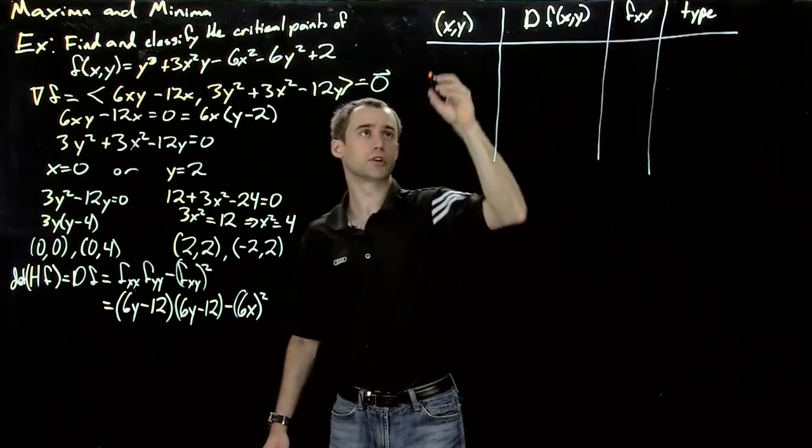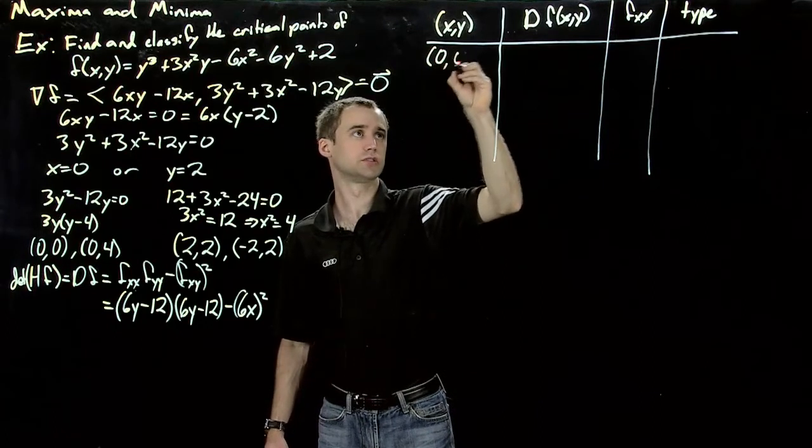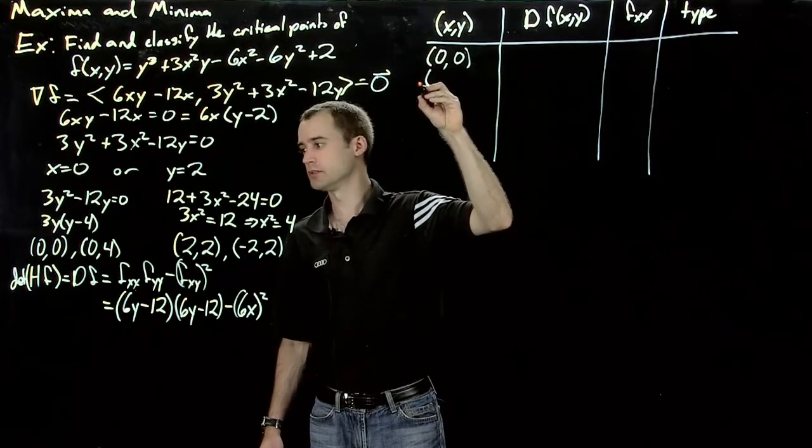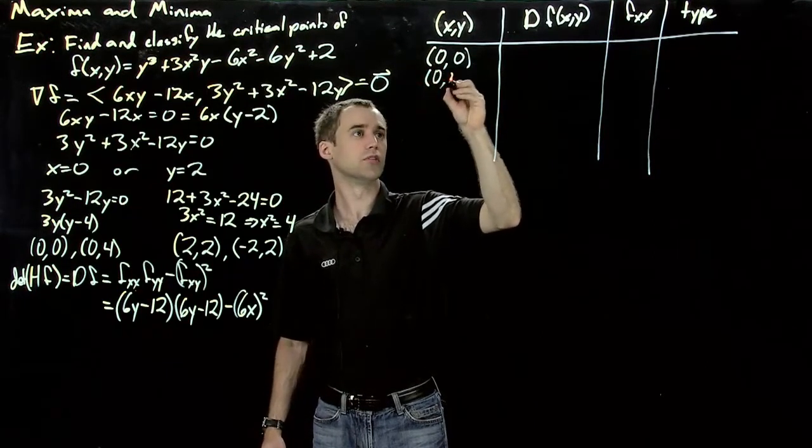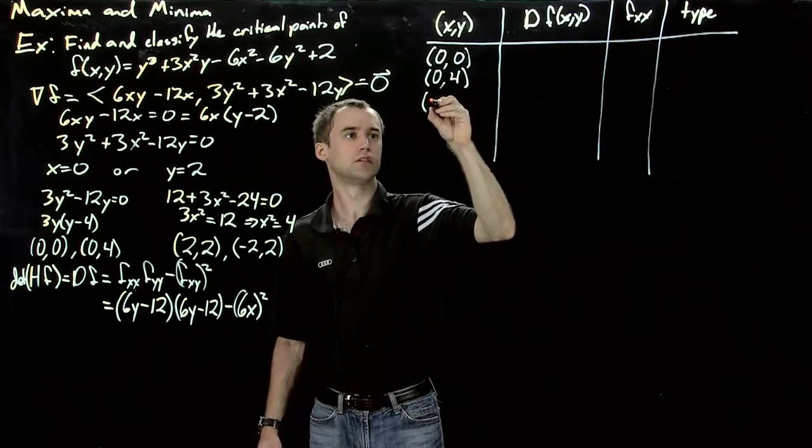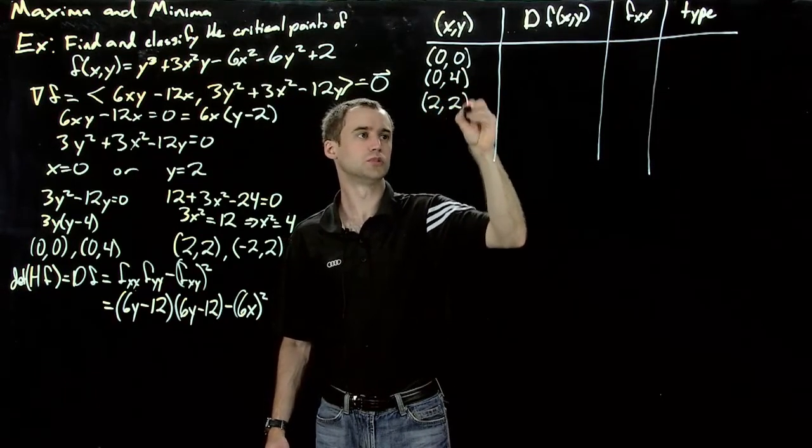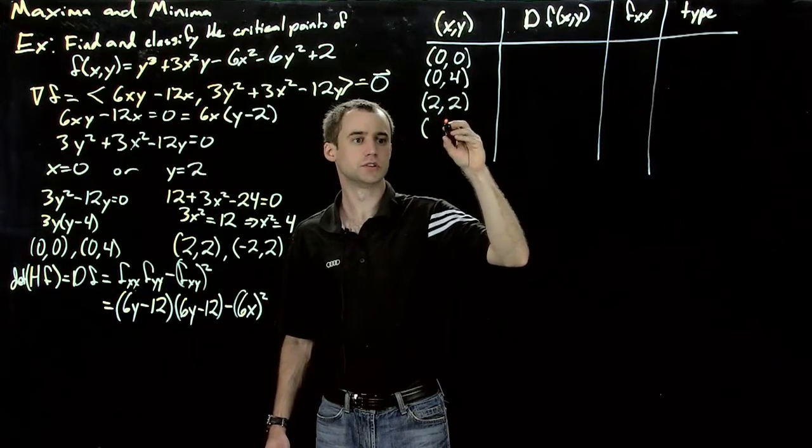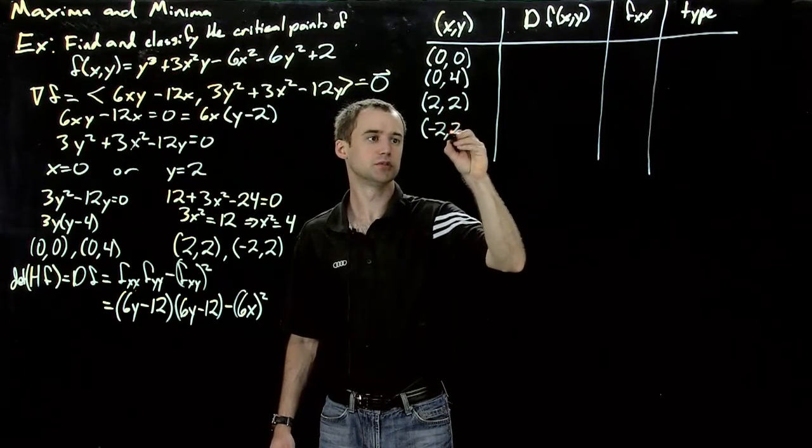So our four candidate critical points are 0, 0, 0, 4, 2, 2, and minus 2, 2.